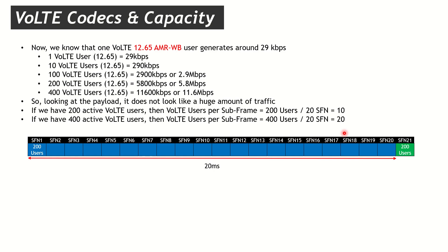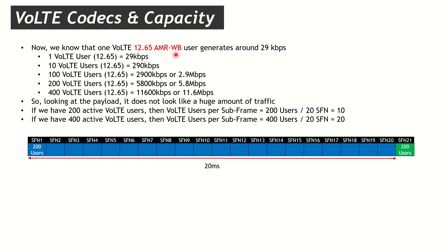Using the 12.65 AMR-WB codec at 29 kbps per user: 10 users need 290 kbps, 100 users need 2.9 Mbps, 200 users need 5.8 Mbps, and 400 users need 11.6 Mbps. These values are not very large — an LTE 10 MHz channel with 2×2 MIMO and 64-QAM can easily support 70–75 Mbps, even more with 256-QAM and 4×4 MIMO.